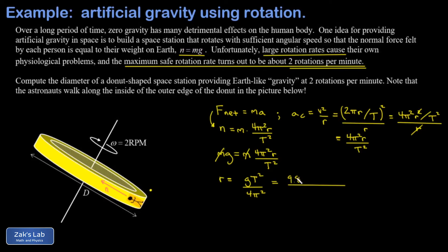Now it's just a matter of plugging in everything we know. g is 9.8 meters per second squared, and then the period squared. I have to express the period in seconds. The rotation rate was given as two rotations per minute. How many seconds does it take for one rotation if you spin twice every minute? That's 30 seconds per rotation.